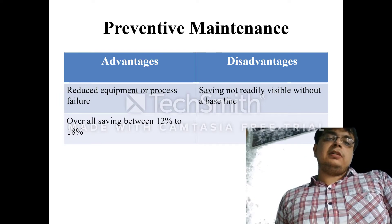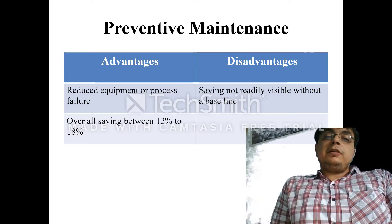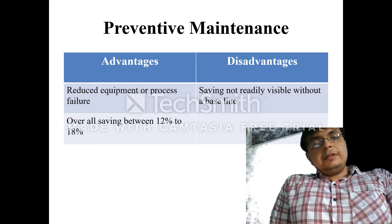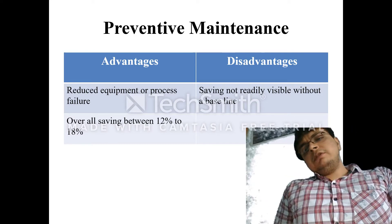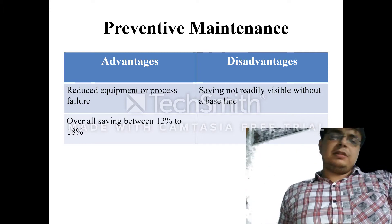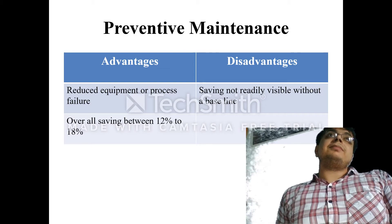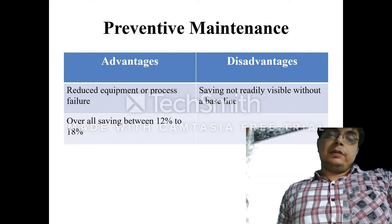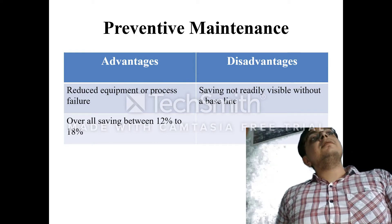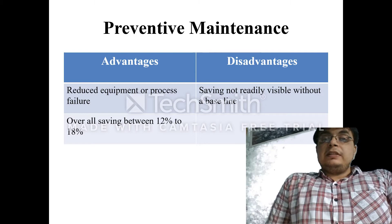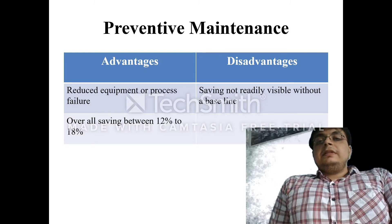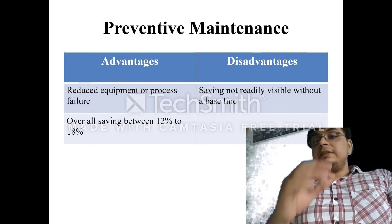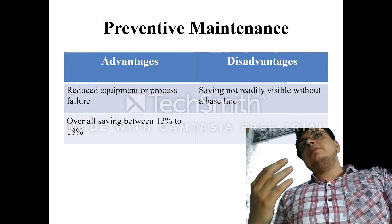Another advantage is it reduces equipment and process failure, so the percentage of failure gets reduced and it is beneficial overall. There is an overall saving of 12 to 18 percent in cost, making it very cost-effective. By adopting preventive maintenance, around 12 to 18 percent of cost is saved. However, the saving is not readily visible without a baseline — there should be some baseline so that the efficiency or adoption can be confirmed as fruitful.